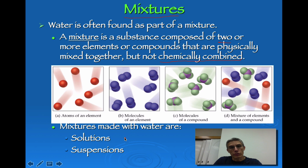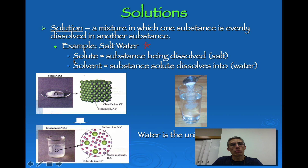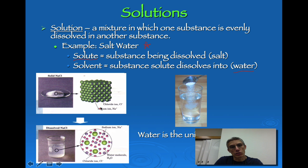Mixtures with water fall into two categories: solutions or suspensions. A solution is a mixture in which one substance is evenly dissolved into another. A good example is salt water. The dissolved substance is the solute — in this case, salt — and the liquid it dissolves into is the solvent, which here is water. On the left you can see solid NaCl, and in the beaker you can see the sodium ions, chloride ions, and water molecules mixed together.